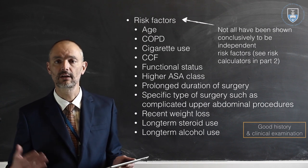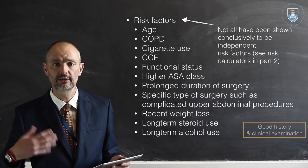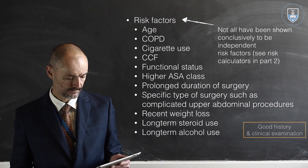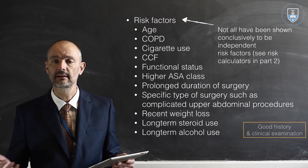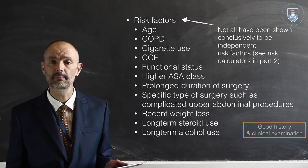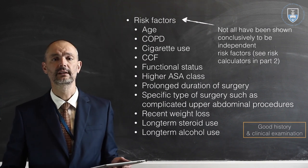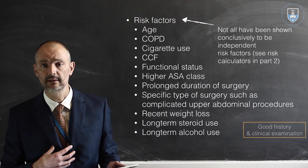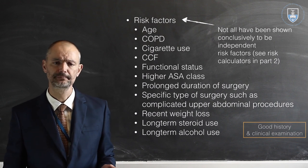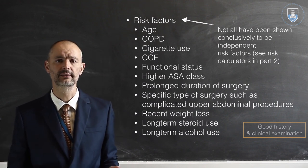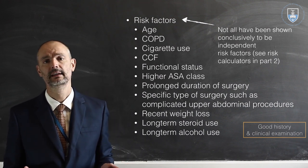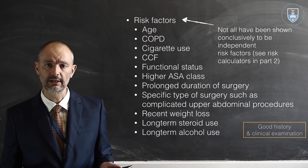Functional status is important — a patient with exercise intolerance who can't walk due to poor oxygen and CO2 exchange is going to have post-operative problems. Also consider higher ASA class, prolonged duration of surgery (there's a big difference between a five-to-seven-hour procedure and a quick 20-minute procedure), and the type of surgery — for example, an appendectomy versus an upper abdominal gastric resection for gastric cancer will have very different outcomes. Recent weight loss also matters.